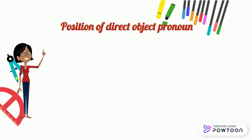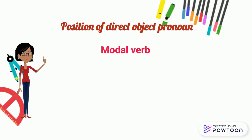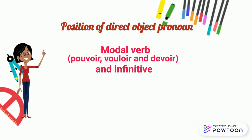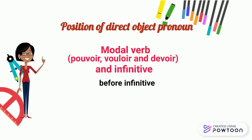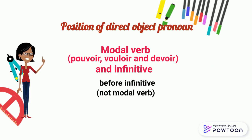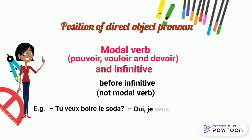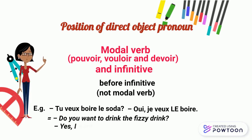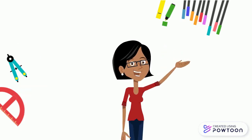And finally, with the modal verbs pouvoir, vouloir, and devoir and the infinitive, the direct object pronoun is placed before the infinitive, not the modal verb. For instance, tu veux boire le soda? Oui, je veux le boire. Do you want to drink the fizzy drink? Yes, I want to drink it. Bon travail. Au revoir.